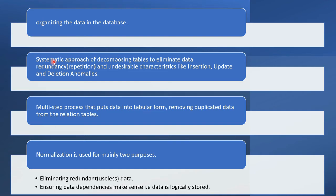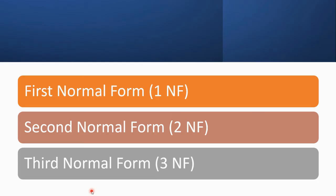Normalization is a multi-step process where we decompose tables to remove duplicate data and establish proper relationships between them. In general, normalization is used for two main purposes: to eliminate redundant data and to ensure that data dependency is correct. We have three main normal forms — first, second, and third. There is also Boyce-Codd normal form and fourth and fifth normal form, but the three main ones are most important.